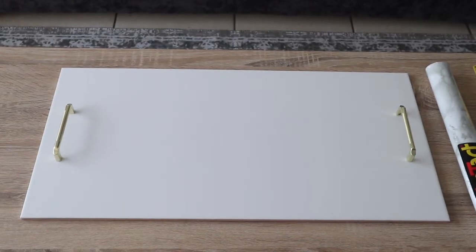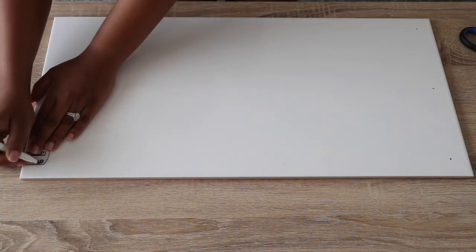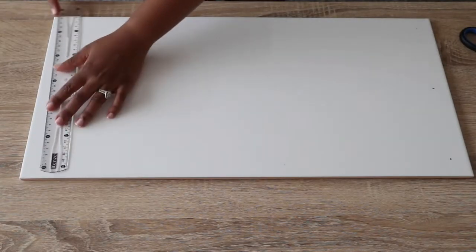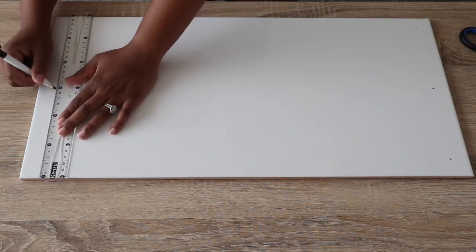Then you need to measure the sides and how far your handles will be. I chose them to be two and a half centimeters from the edge, so I measured the bottom and the top. And then lengthwise the tile was 30 centimeters and halfway was 15 centimeters. I marked that to make sure that the middle of the handle would be in the middle of the tile.